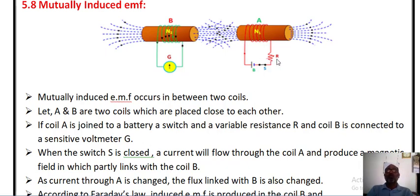As the current through A changes, it changes the flux linkage with coil B. According to Faraday's law of electromagnetic induction, an EMF is induced in coil B.